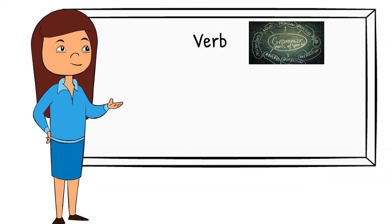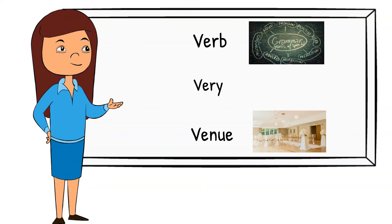Verb. It's a part of speech. I just did a video on have, hasn't had. Very. This is going to be a very long video. But it's got a lot of great stuff in here. Venue. A place where you hold an event. This is a wedding venue in this picture.